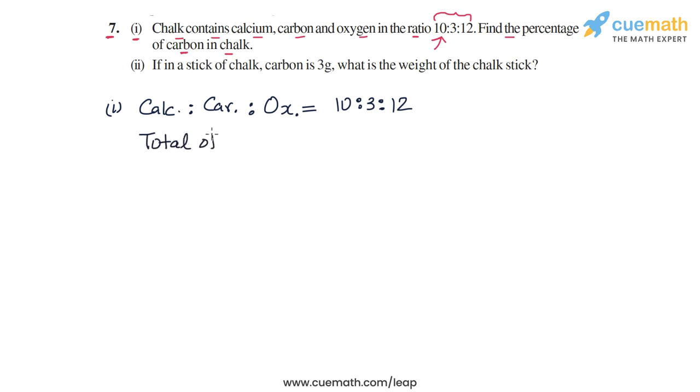What is the total of parts? That's simply 10 + 3 + 12, which equals 25. So the total of parts is 25. Now we can find the amount of carbon as a fraction of the whole.